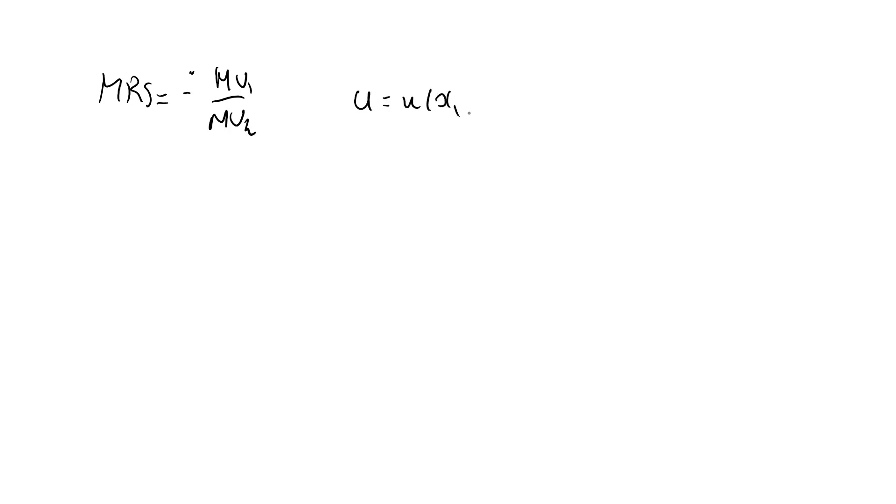So suppose that we have a utility function. It depends on two variables like this, and let's say that this utility function is a smooth function. If I increase my consumption of good one by a small amount that I denote by delta x1, what will happen to my level of utility?